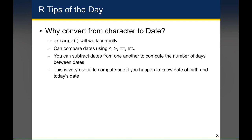Another useful feature is that you can subtract dates from one another and get back the number of days between dates. This is quite useful if you know someone's date of birth in a data set and know either today's date or the date on which they were seen for a specific visit. All you have to do is subtract the dates and then divide by 365 to get an approximate age for that person.